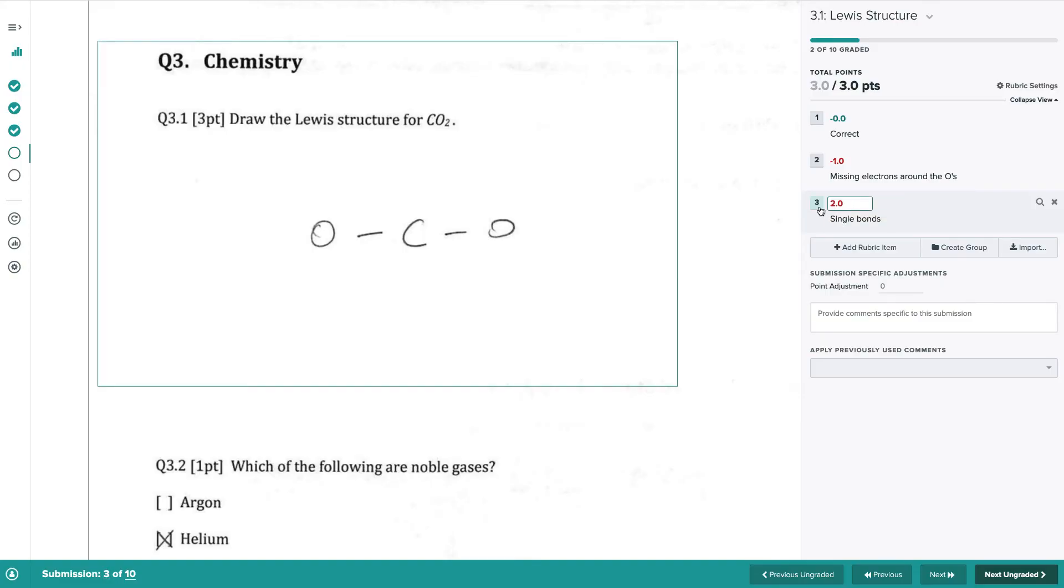This student also forgot the electrons around the O's. We check that off too and we click the next button to move on to the next student.